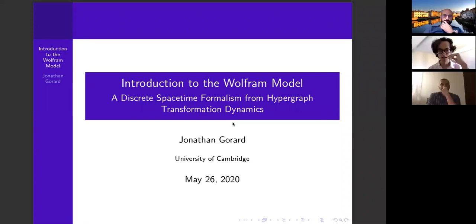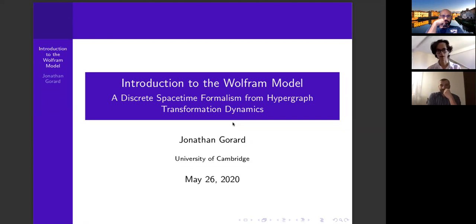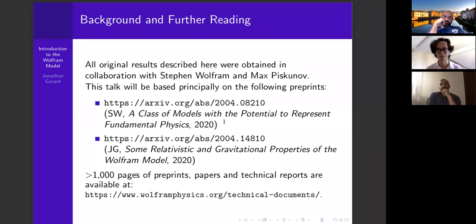This is intended to be a very short, necessarily terse, but hopefully self-contained introduction to the Wolfram model, which is a new discrete spacetime formalism that you can think of as a sibling of causal set theory and causal dynamical triangulation programs, and arguably a more distant cousin of loop quantum gravity, spin network, and spin foam approaches. It's based on hypergraph transformation rules, or set substitution systems. All the original research was done in collaboration with Stephen Wolfram and Max Piskunov. This talk is based primarily on two preprints covering elementary properties of the model and its relativistic and gravitational implications. More materials are available at the Wolfram physics research website.